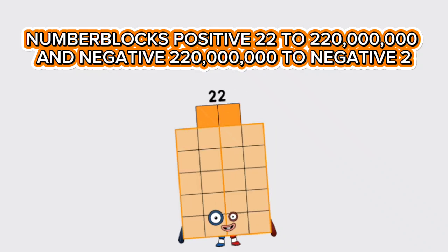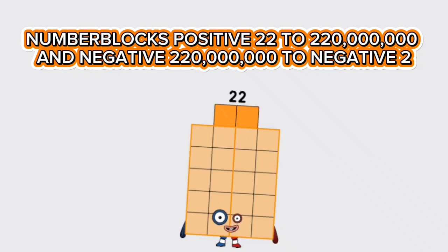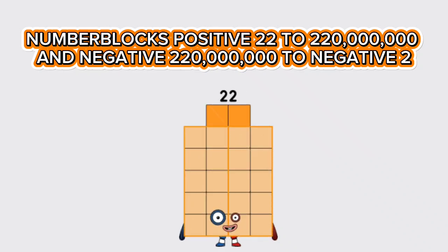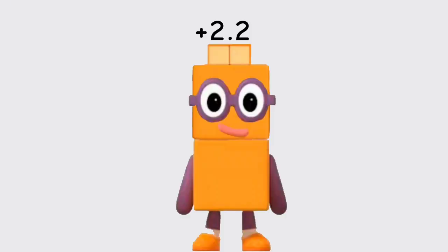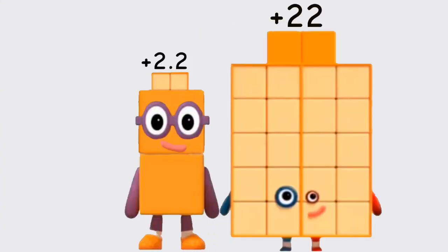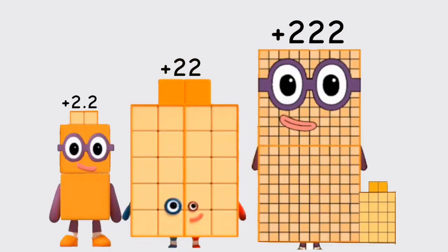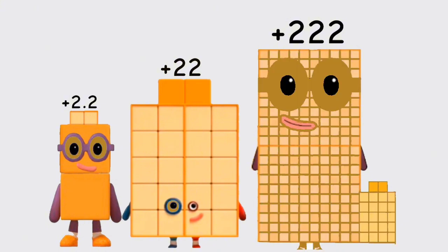Number blocks: positive 20 to 220 million, and negative 220 million to negative 2. Positive 2.2, positive 22, positive 222.